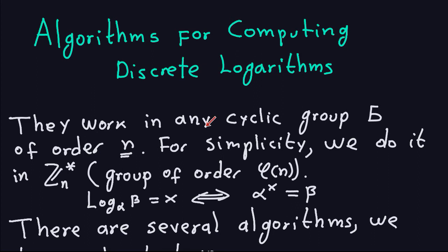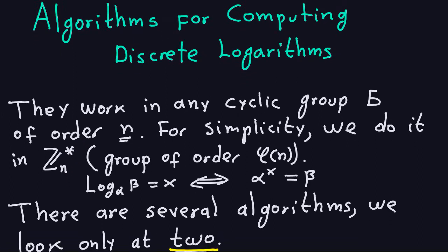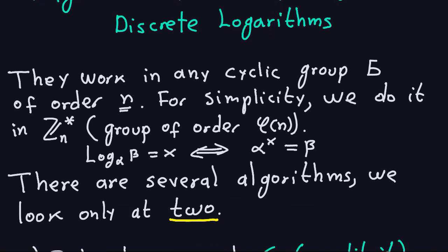These algorithms are going to work in any cyclic group of order n, so if you have a group of order n this algorithm will also work for that. But we're going to do it in the particular group Zn* because it's easier to do computations there. Now remember what I'm trying to do: given alpha, which is a generator, and an element beta of my group, I want to compute the discrete log — find X such that alpha to the X is equal to beta.